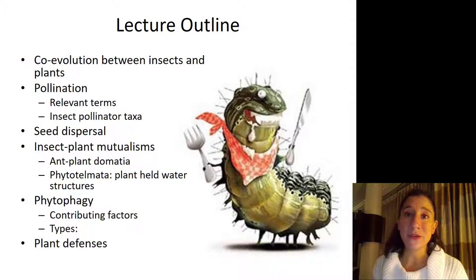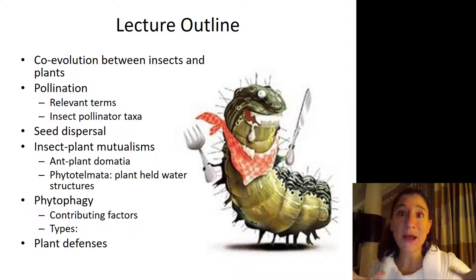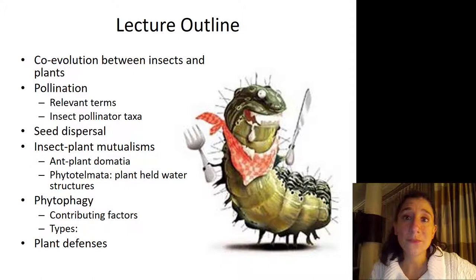Then we are going to switch gears, because we have been talking a lot about positive ecosystem services that insects are providing — both as decomposers in soils and all of the roles that they play in aquatic environments that you heard last week from Dr. Chortis — as well as the role that they play as predators and parasitoids. Today we also cover pollinators and seed dispersal, but then we are going to talk about some of the negative roles that insects play on plants — namely, the roles they play in phytophagy and in plant defenses.